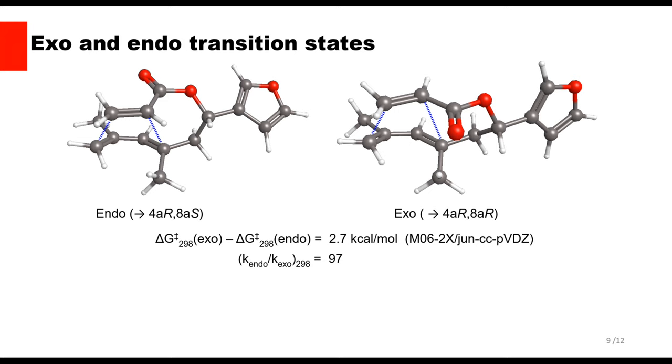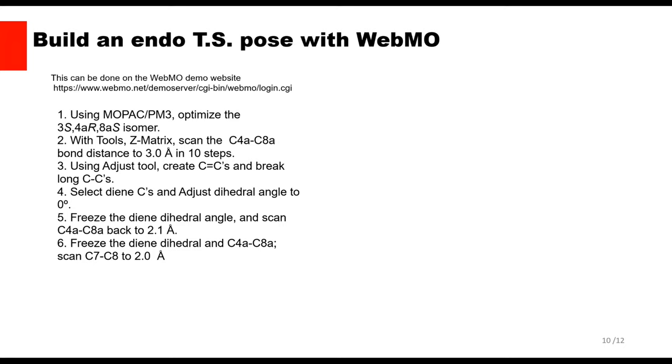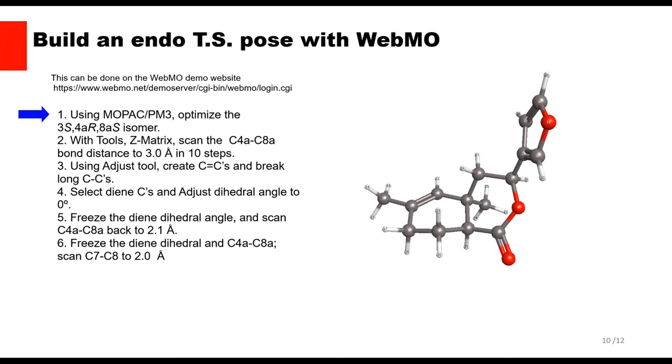This slide shows one way to use WebMO to build an approximate transition state for an intramolecular Diels-Alder reaction. These steps can be carried out on the WebMO demo server or on a copy of WebMO installed on your local machine. The best approach is to build the product molecule, then back off the dienophile.